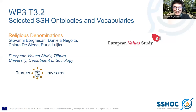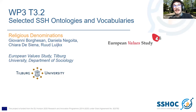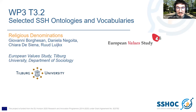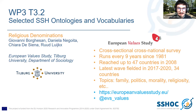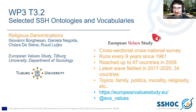Hello everybody. Today I'm going to talk about the religious denomination classification and database. Daniela Negoita, Chiara de Siena, and Ruth Laiux from the European Value Study in Tilburg are working on this project. The European Value Study is a cross-sectional, cross-national survey that runs every nine years since 1981, reaching up to 47 countries. In the last wave we fielded 34. Topics range from family to politics, morality, and of course religiosity.